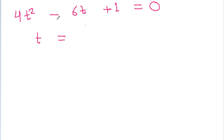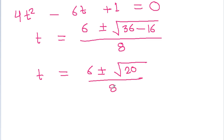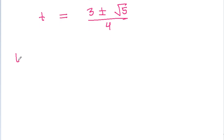Using the quadratic formula, t equals minus b, that is 6, plus or minus root of b² minus 4ac, which is root of 36 minus 4·4·1 = 36 minus 16 = 20, all divided by 2·4 = 8. Dividing, we get t equals (3 ± √5) / 4.